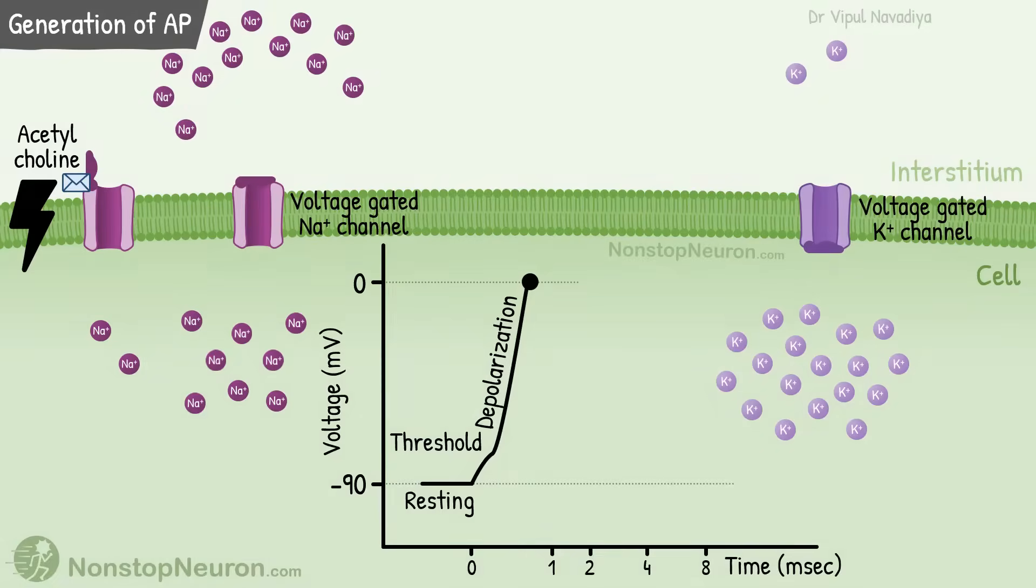Then sodium channels start closing so the inflow of sodium stops. Also potassium channels start opening so now potassium moves out of the cell. As the positive charge is leaving the cell, the voltage moves back to the negative direction. This is called repolarization.